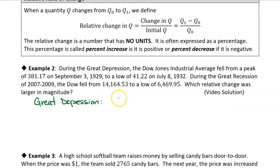So the final amount on July 8th, 1932, was 41.22. And we're going to subtract the initial, which is 381.17, okay? And we want to divide by the initial. So the initial quantity was that 381.17.